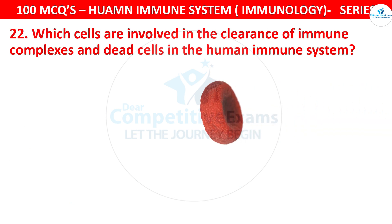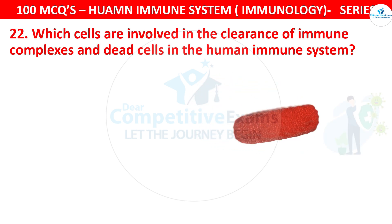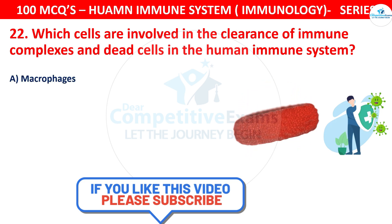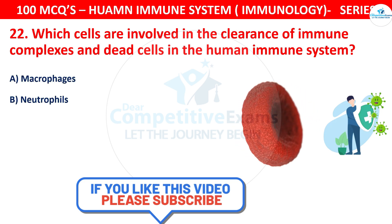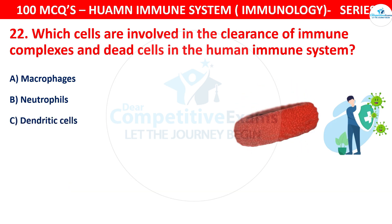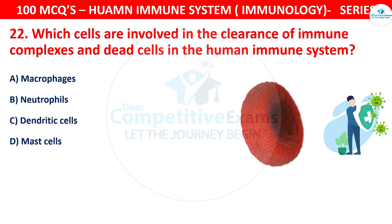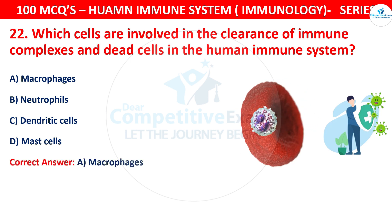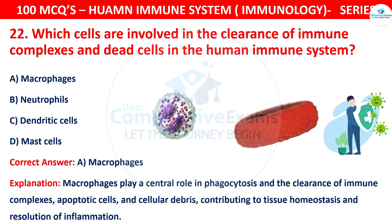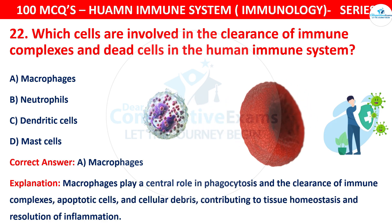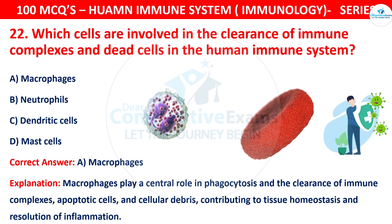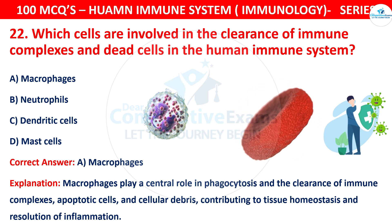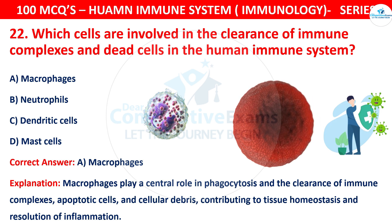Question 22: Which cells are involved in the clearance of immune complexes and dead cells in the human immune system? Your options are Macrophages, Neutrophils, Dendritic cells, or Mast cells. The correct answer is A, that is Macrophages. Macrophages play a central role in phagocytosis and the clearance of immune complexes, apoptotic cells, and cellular debris, contributing to tissue homeostasis and resolution of inflammation.